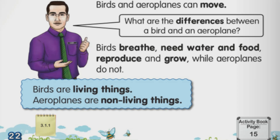It is important for you to understand that living things need the five basic characteristics: they should be able to breathe, they need water and food, they reproduce, they grow, and they move. Looking at the bird and the aeroplane, we know both can fly. But the aeroplane does not breathe, it doesn't need food or water, it does not reproduce or grow. This means the aeroplane is a non-living thing.